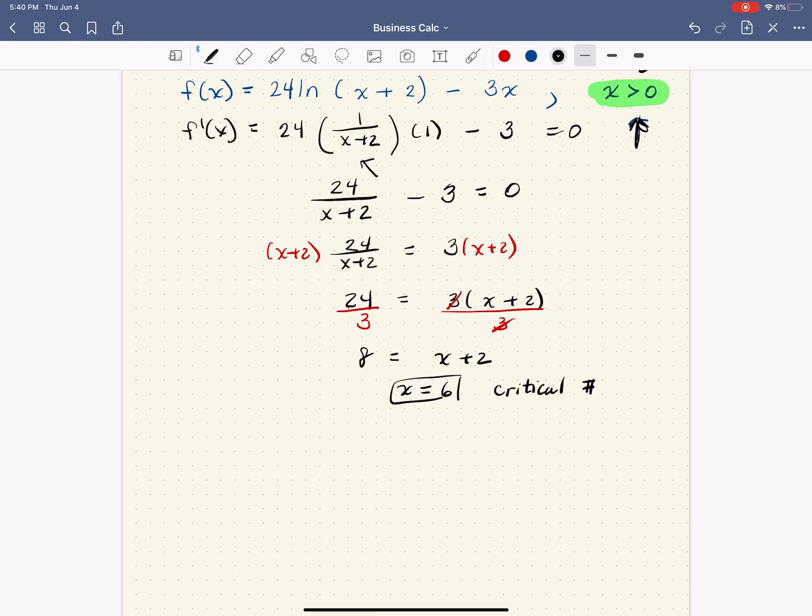So the way we do this, we know we have something happening at 6. So how do we know it's a minimum, how do we know it's a maximum, without doing any further analysis? Can we just use the original function? The answer is yes.